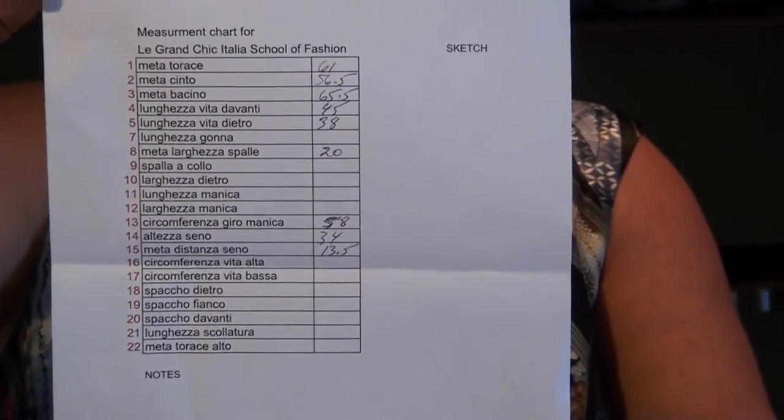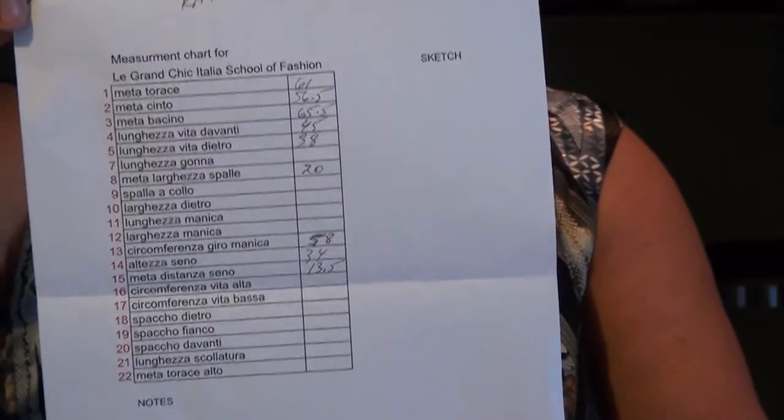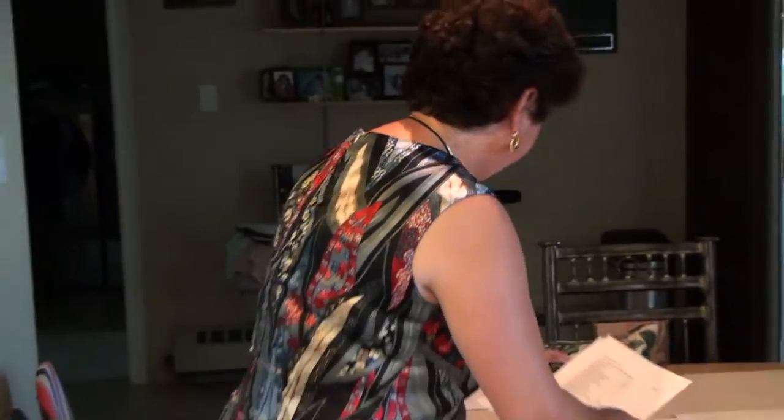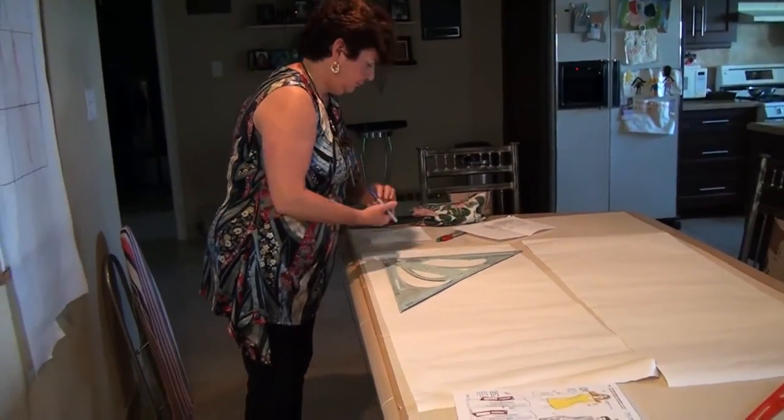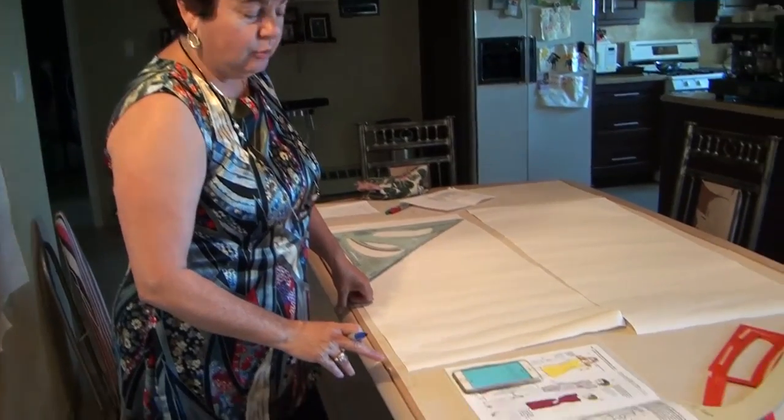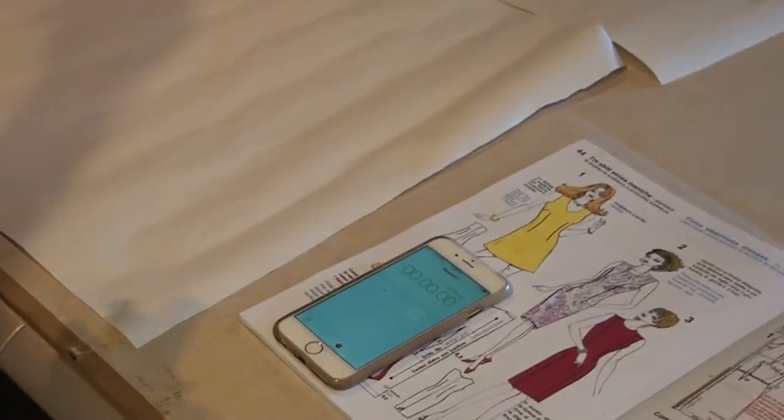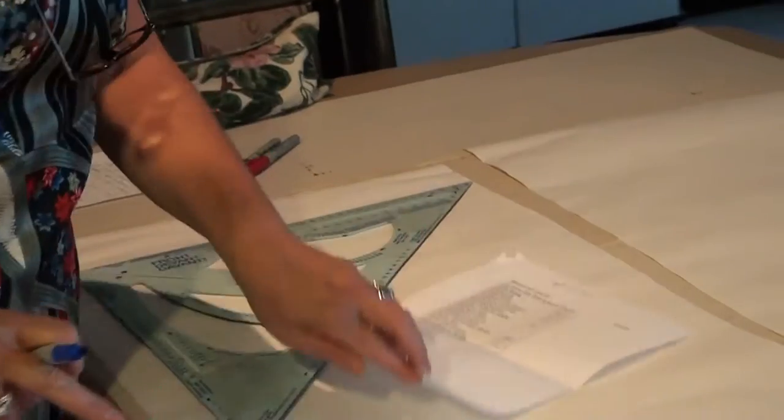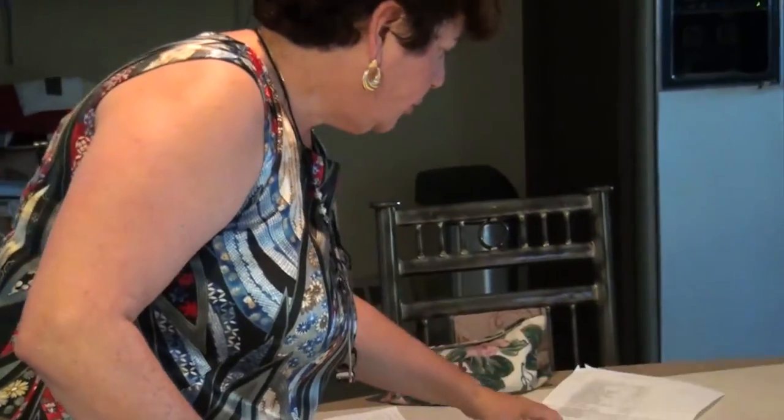These are the measurements and they are taken in metric and that's what I will be using to draft the pattern. To prove that a bodice with shaping can be done in under five minutes, I'm going to start the timer and start the draft using the measurements that I've shown you. I have not drafted anything using these measurements for this particular person before. This is going to be a first time, so I'm taking quite a chance. Alright, so here goes.